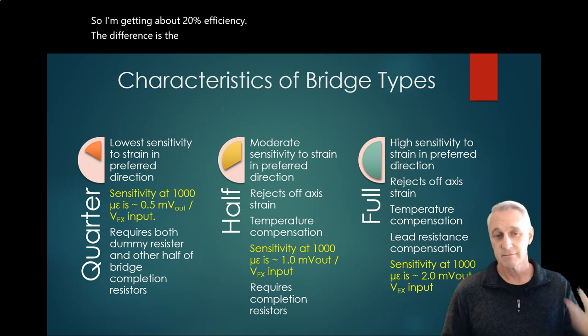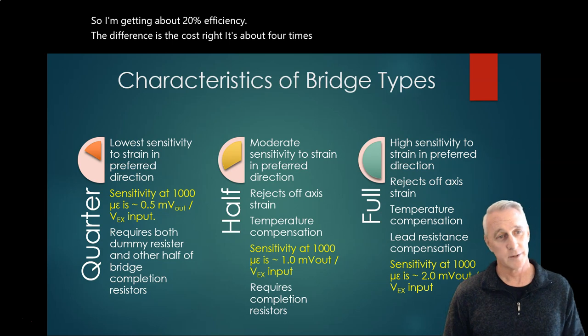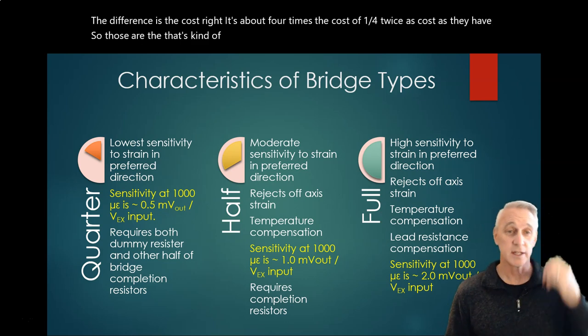The difference is the cost. It's about four times the cost of a quarter, twice the cost of a half. So that's kind of the balance in decision making that's played.